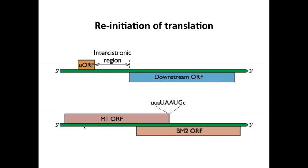Another example is an influenza virus mRNA that has two open reading frames — the M1 and the BM2 — which overlap. Ribosomes initiate at the 5' end, translate the M1 ORF, and reach a termination codon, UAA. But then they move just one base past that terminator and find an AUG — the A of that AUG is actually the last base of the termination codon. So the ribosomes keep translating, reinitiate, and make the separate BM2 protein beginning right at that AUG.